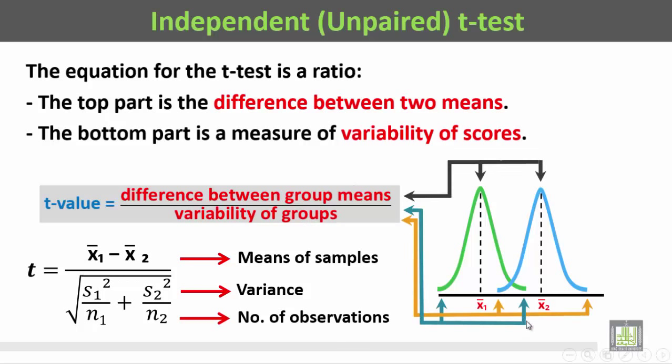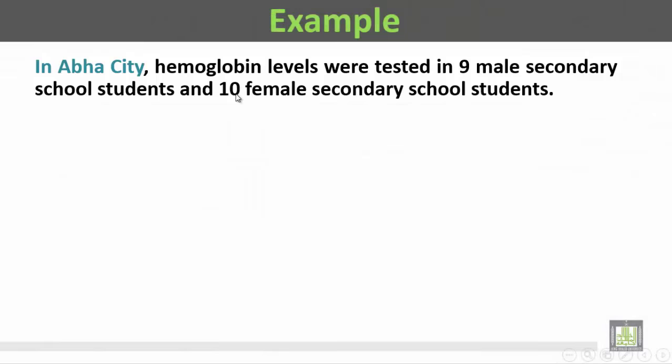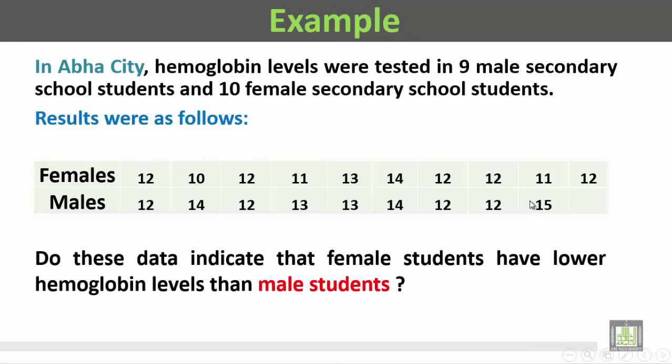For example, in Abha City, the results of the hemoglobin levels in ten female secondary school students and the results of hemoglobin levels for nine male secondary school students were collected.